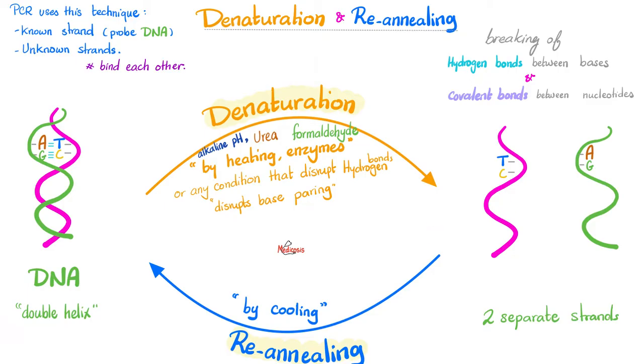However, the good news is, if you cool that DNA down, well, the bases will join again. And this is called re-annealing, meaning rejoining. Note that when I denatured my DNA, I broke the hydrogen bonds and the covalent bonds. The hydrogen bonds between the bases and the covalent bond between the nucleotide were broken. But in re-annealing, they rejoin again.